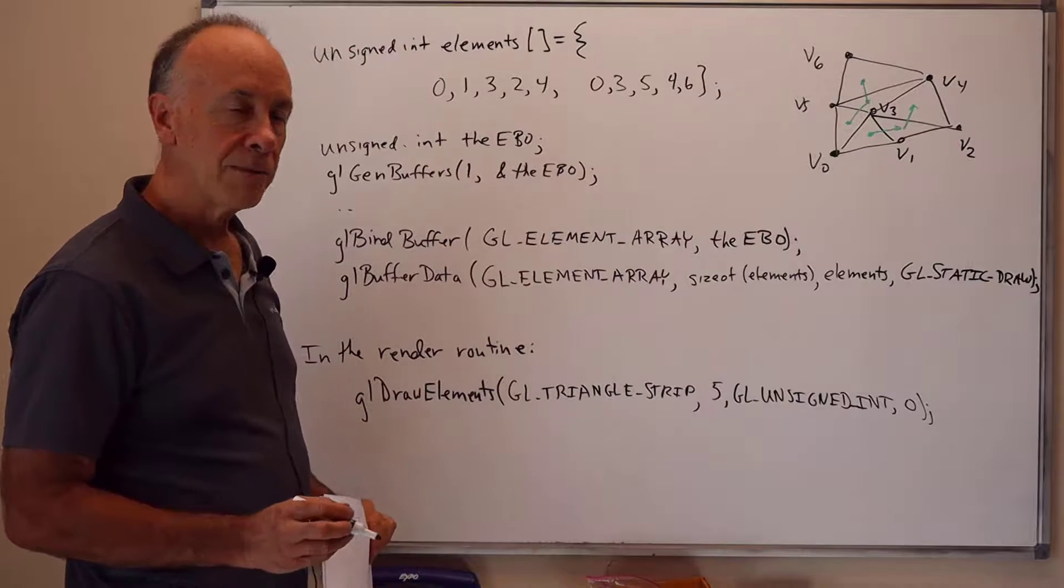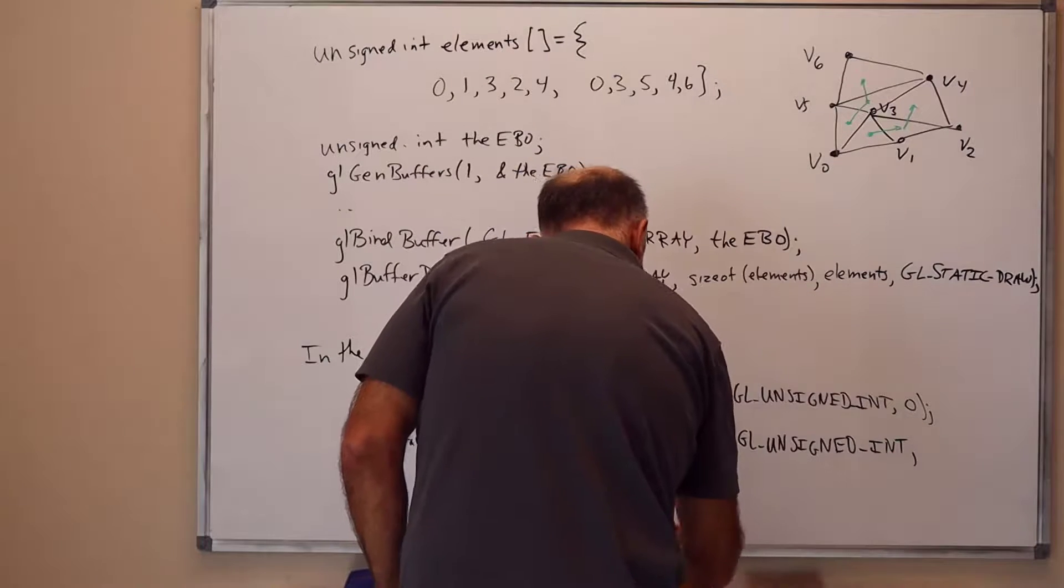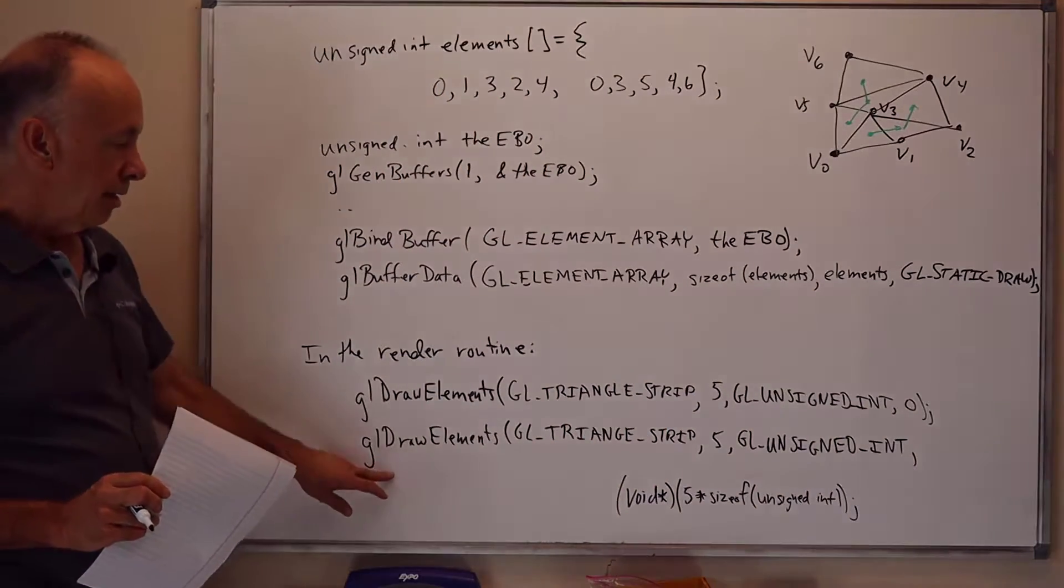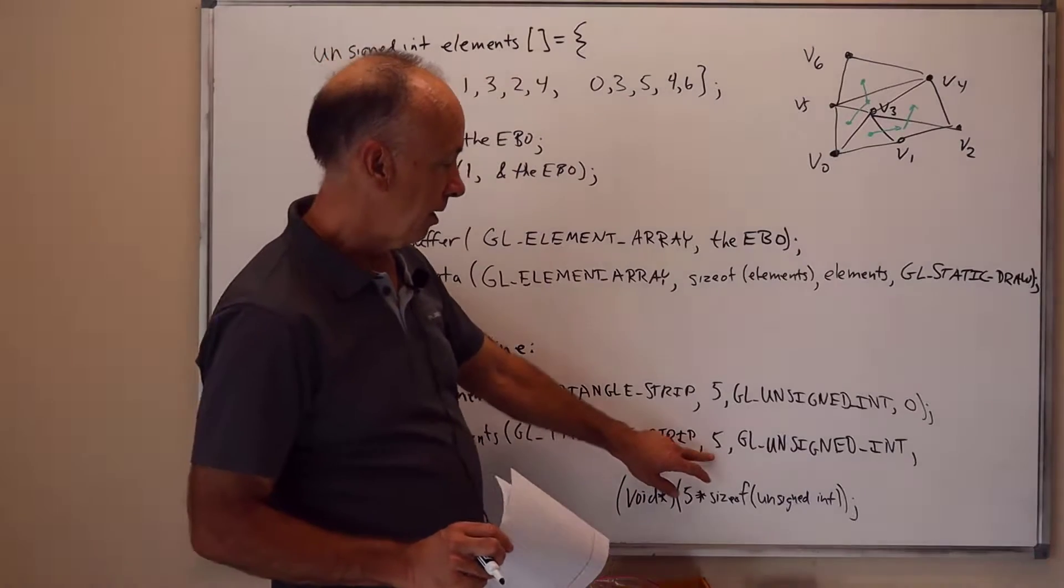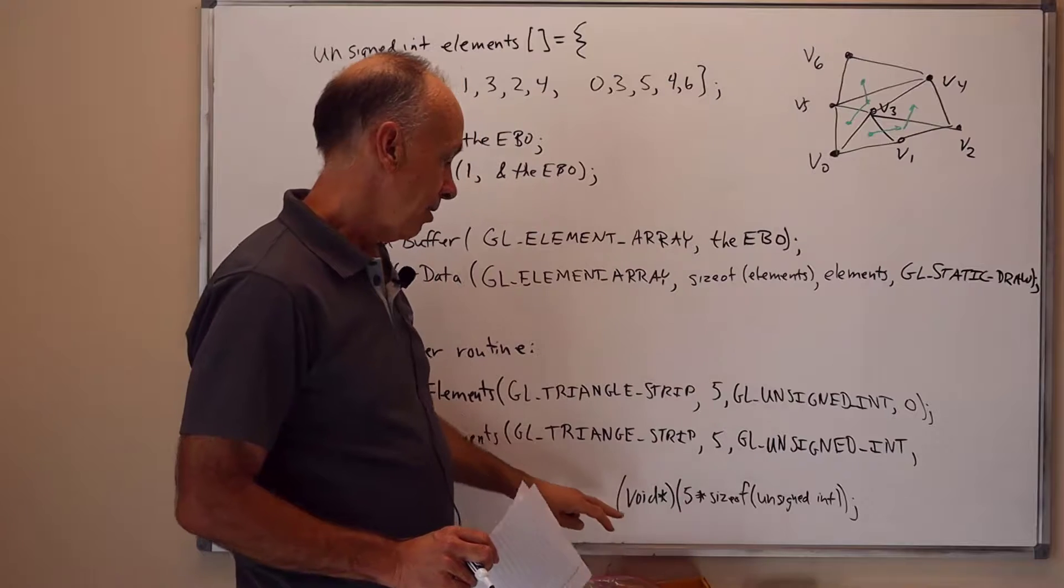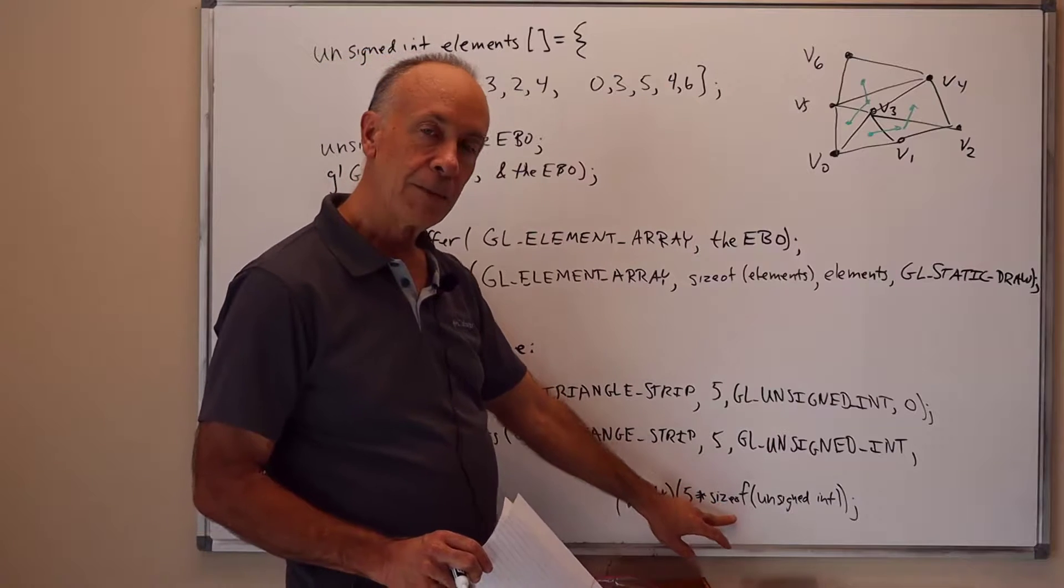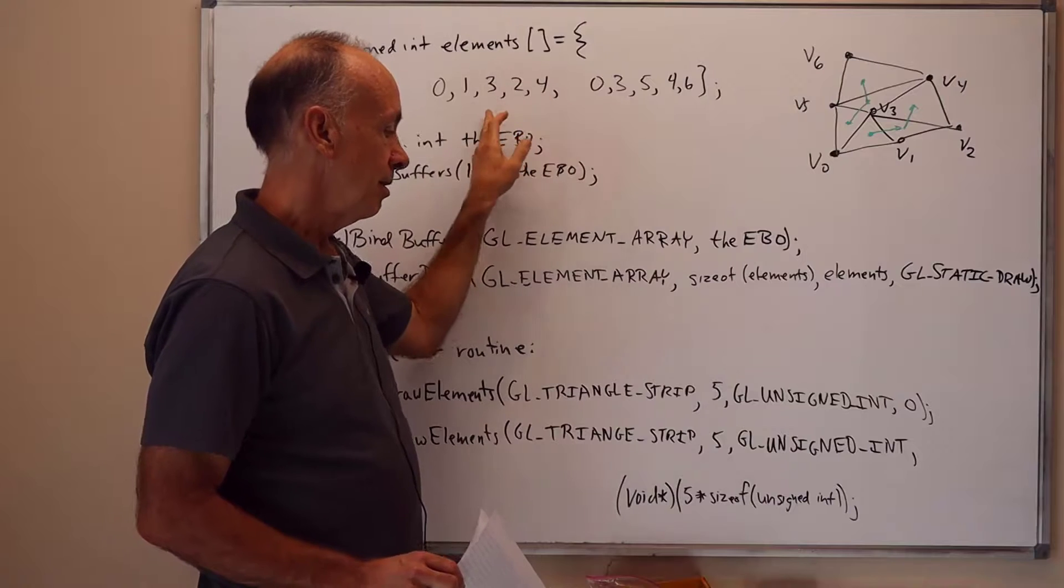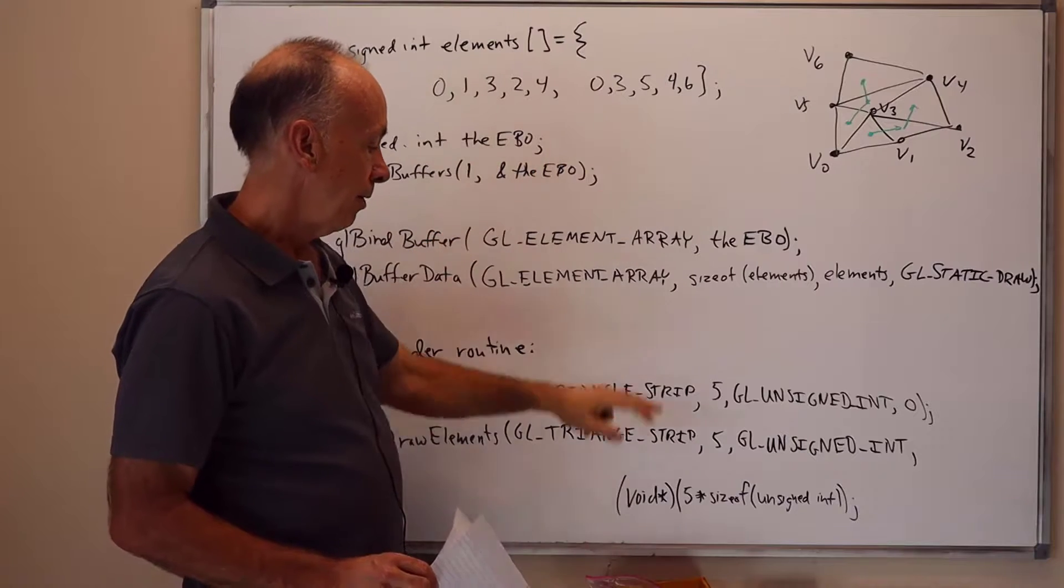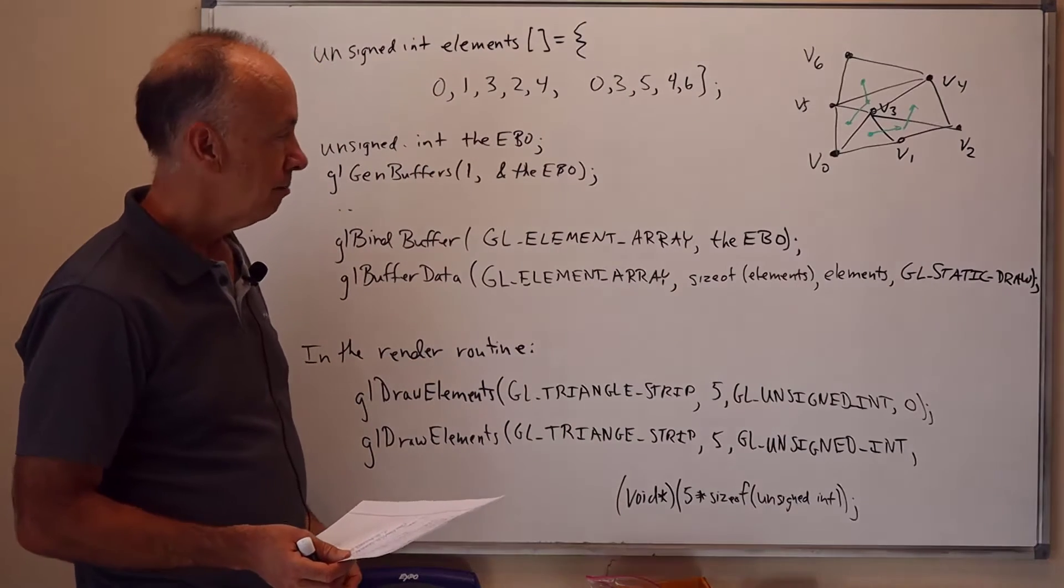The second triangle strip is rendered similarly. Here's the glDrawElements command. It is drawing a GL_TRIANGLE_STRIP, it's using five vertices. Now it's going to be 0, 3, 5, 4, 6. The elements are still unsigned integers, and the starting point in the array is specified in bytes. So it's five times the number of bytes per unsigned integer because we're skipping over five unsigned integers to get to the first vertex for the triangle strip. The void star is because we need to pass in a pointer, a sort of generic pointer.